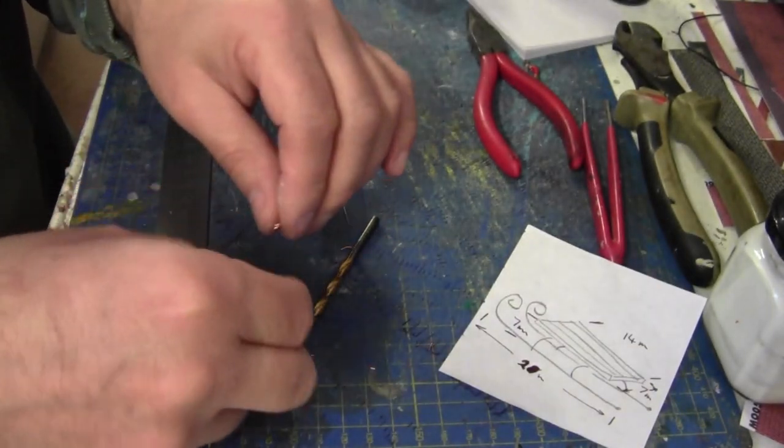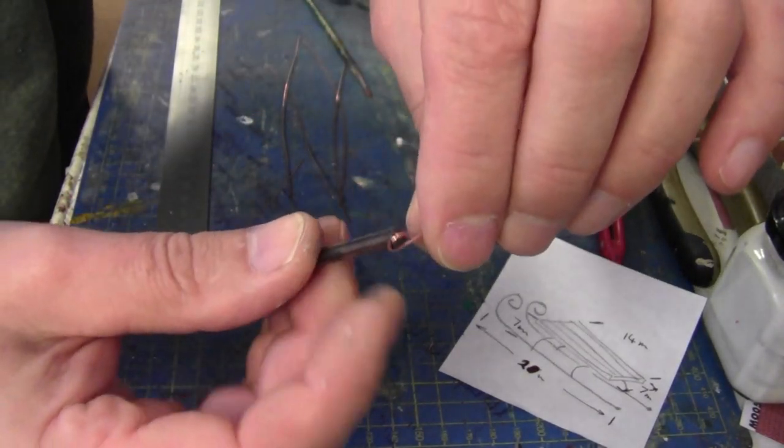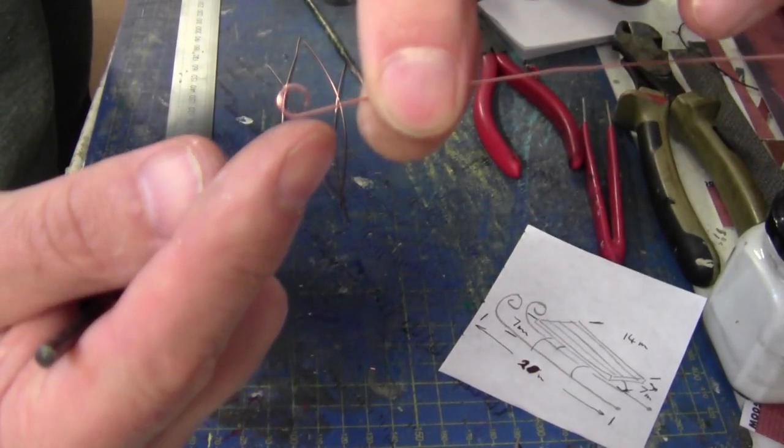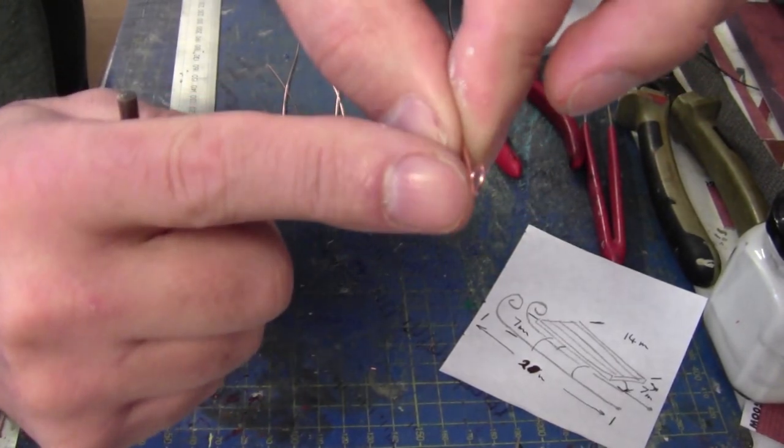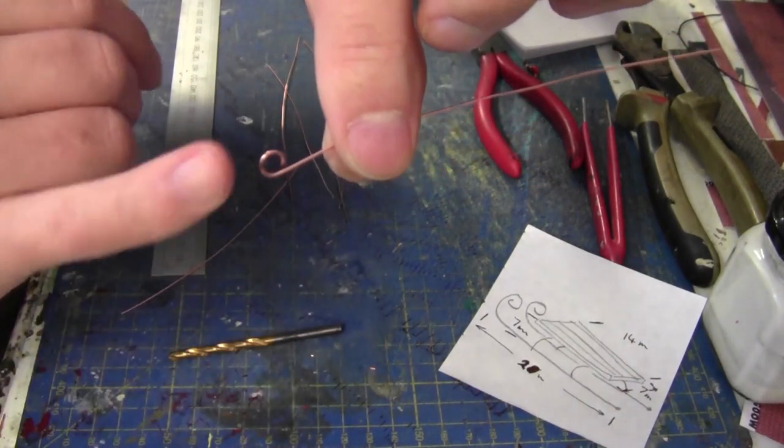So I've decided to use a 4 millimeter drill bit and just wrap the copper around it pulling it tight, and then just cutting the edge of the circle off to form the curl. So I shall continue and make some more of these.